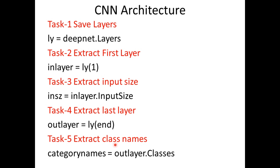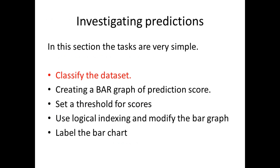This architecture helps us study how the classification process is happening stage by stage: loading the image, extracting features, performing the convolutions, and finally from the output layer converting numbers to categories to see the output. Once the CNN architecture has been understood, we proceed with investigating the predictions, which is very easy.